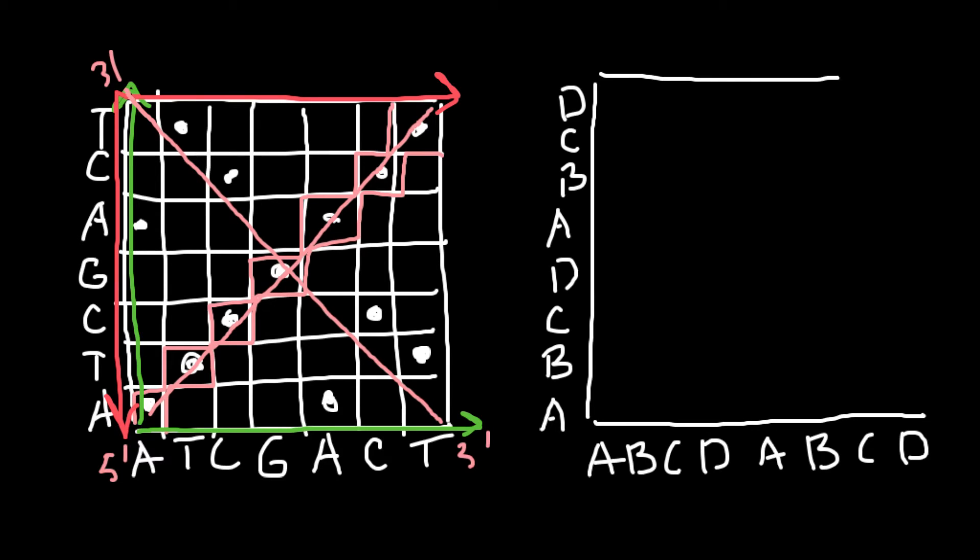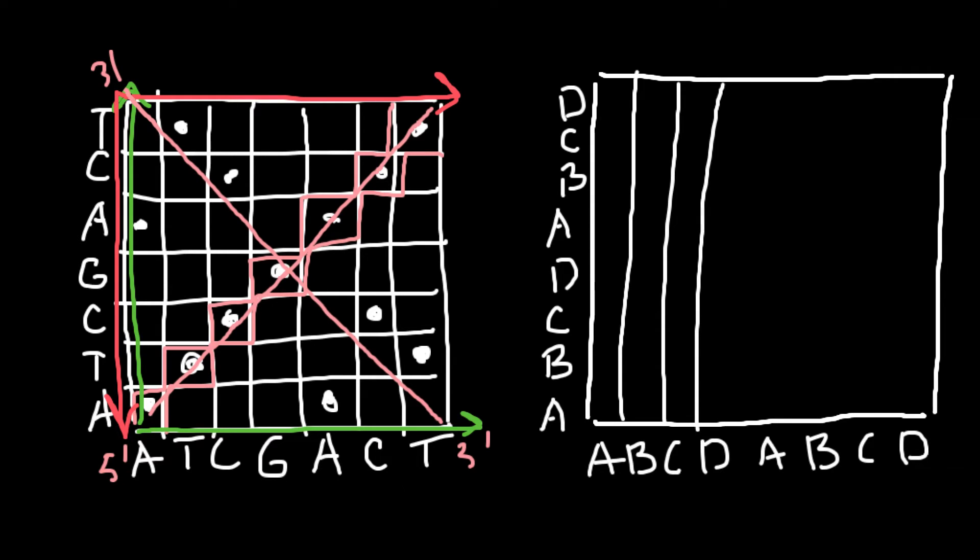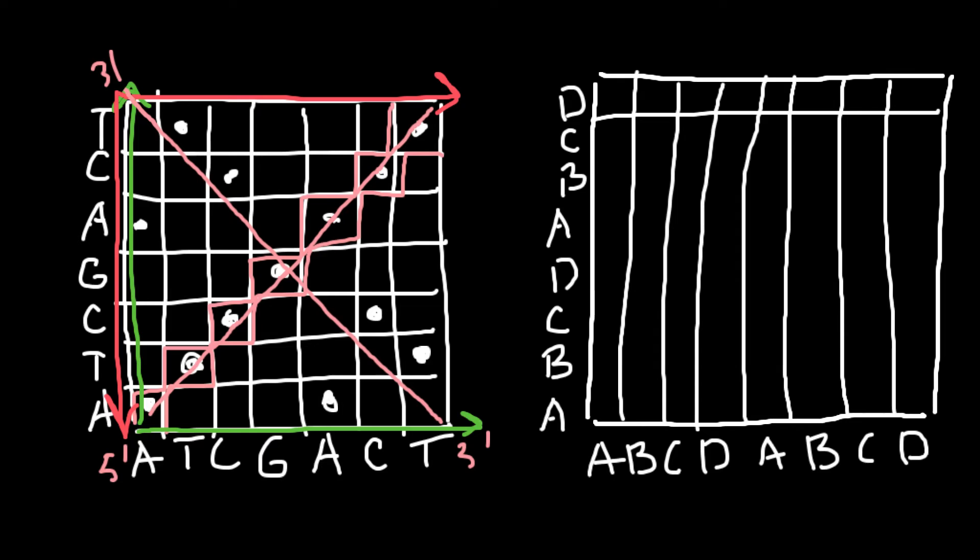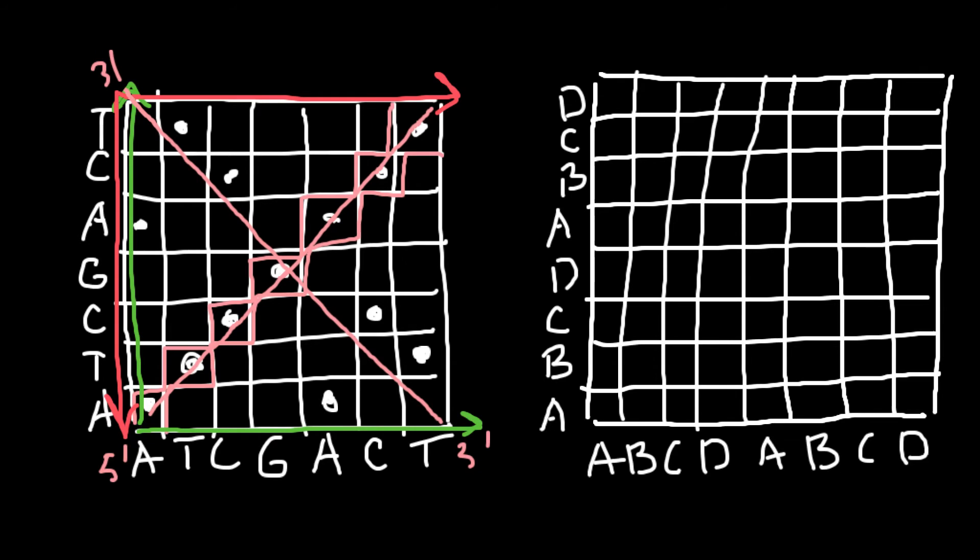So 20 amino acids goes under short abbreviations, and each letter means one amino acid. Now we build a square eight by eight, so this is going to be 64 cells. And now we need to make eight vertical columns and eight rows.